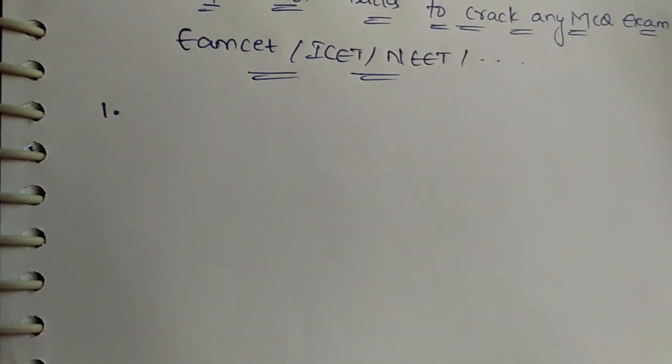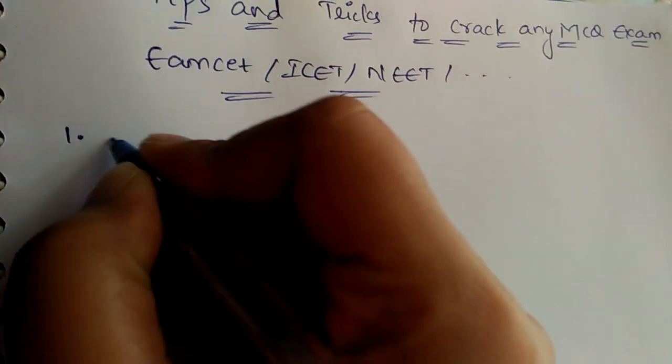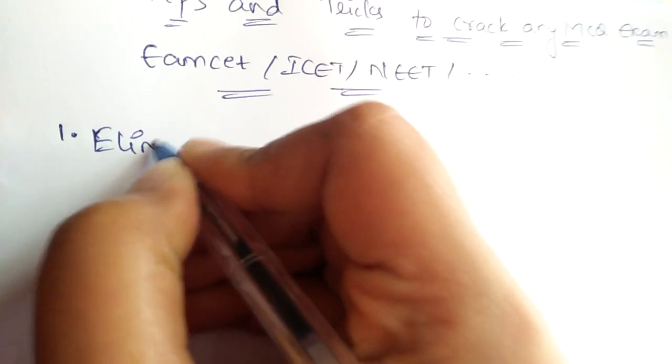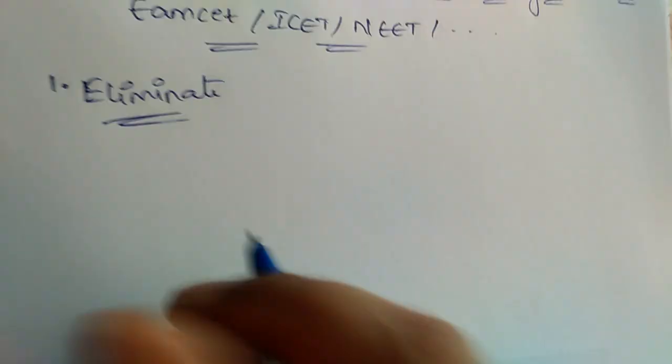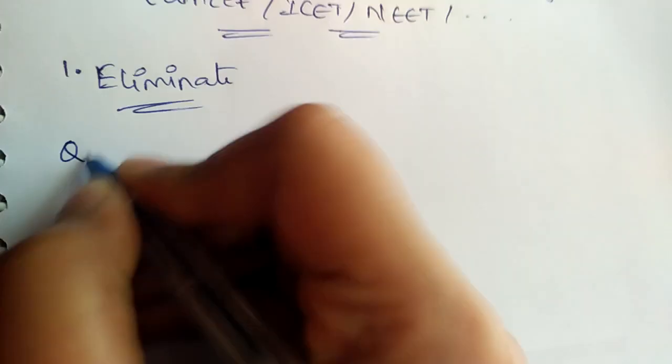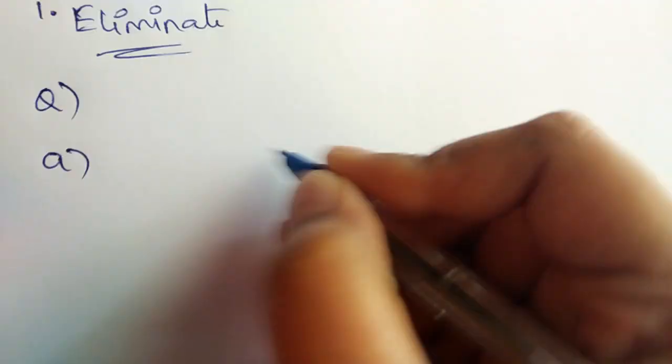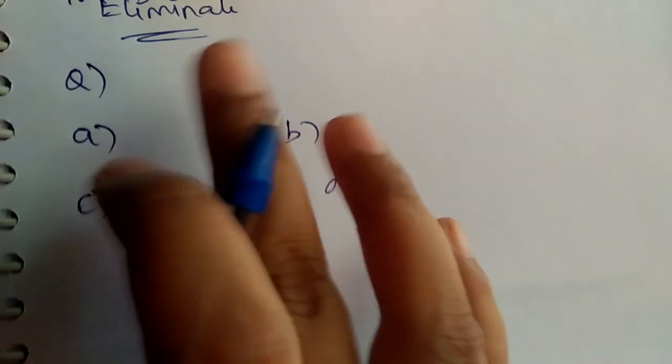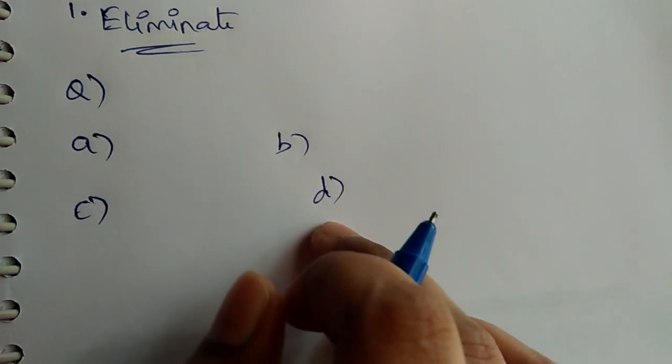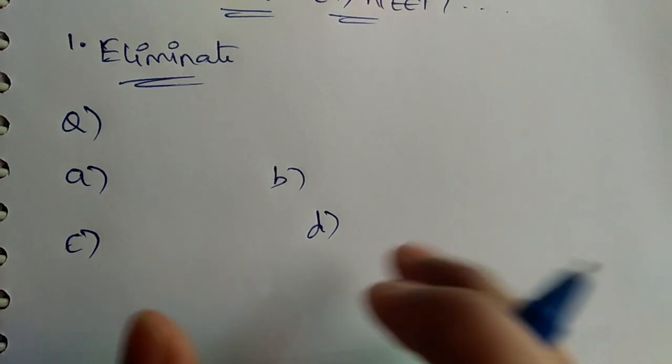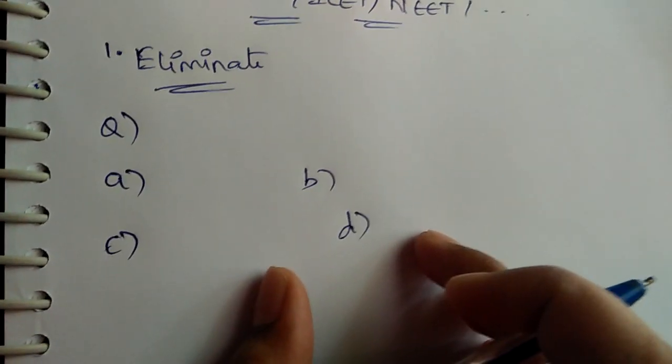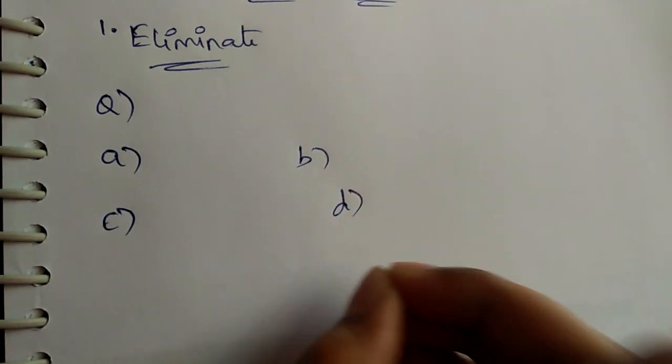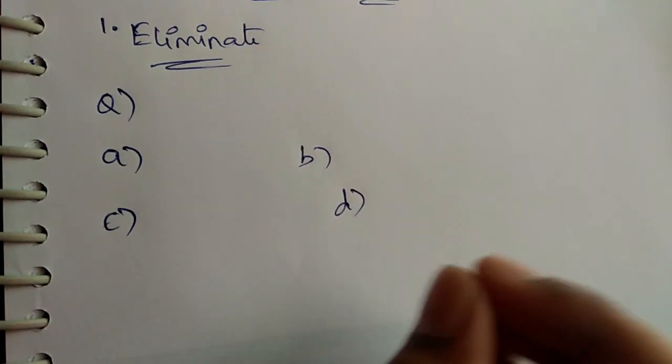Coming to the first method, it is the elimination method. Elimination method is nothing but when there is one question with four options. What you need to do is, when you are not sure about the answer, you should first eliminate the irrelevant options.